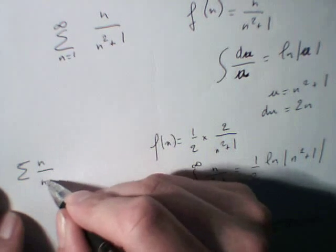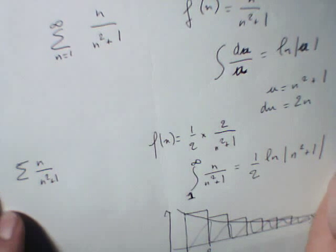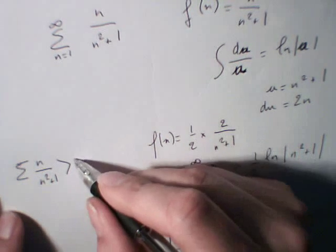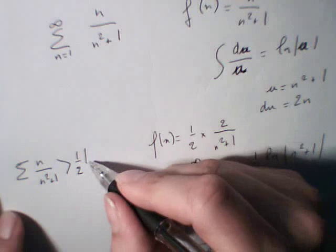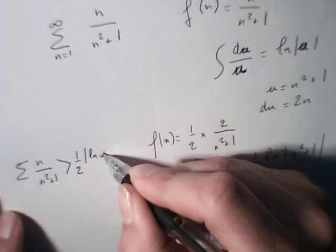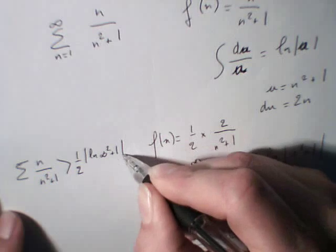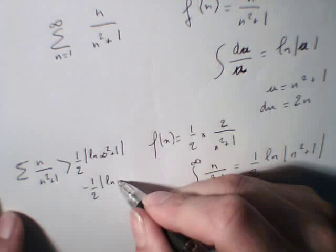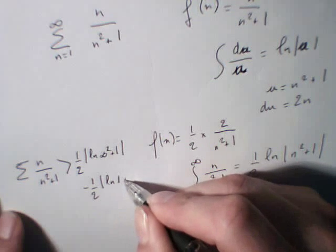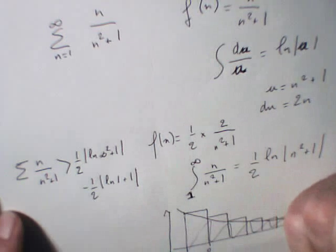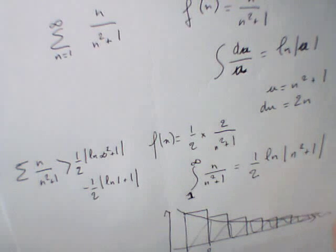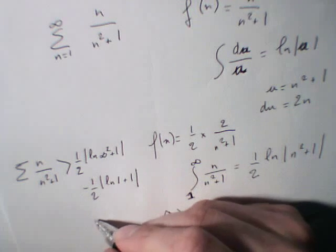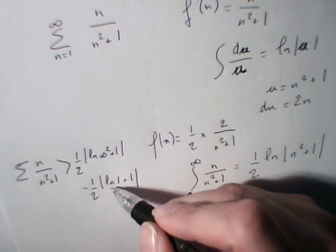So we know that the sum of the series that we have, n divided by n squared plus 1, is going to be superior to 1 half of ln of infinity squared plus 1, minus 1 half of ln of 1 squared, which is 1, plus 1. So this is ln of 1 plus 1. ln of 1 is 0, so minus 1 half. So basically you've got infinity minus 1 half, which is infinity.